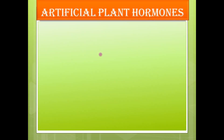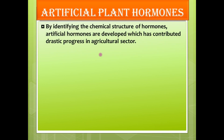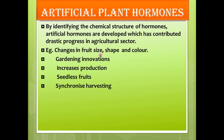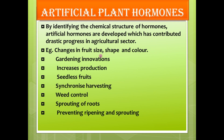Now let's move on to artificial plant hormones. By identifying the chemical structure of hormones, artificial hormones have been developed which have contributed to drastic progress in the agricultural sector. For example: changes in fruit size, shape, and color; gardening innovations; increased production; seedless fruits; synchronized harvesting — meaning harvesting at the same time; weed control — that means removing unwanted plants from the field; sprouting of roots; and preventing ripening and sprouting.